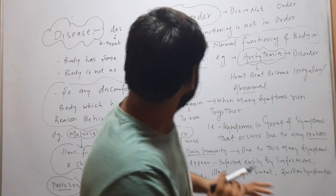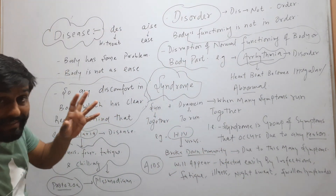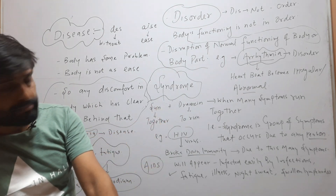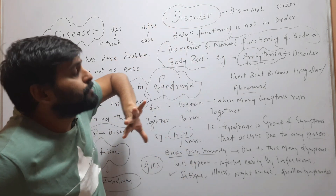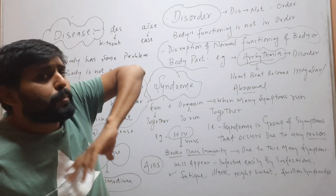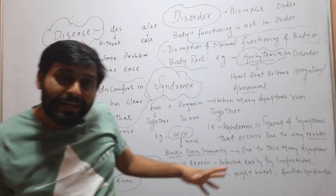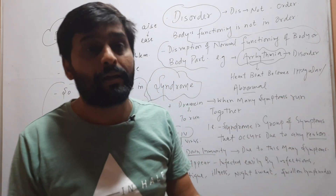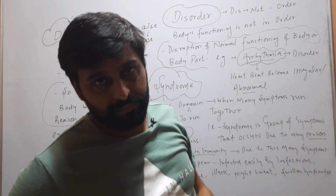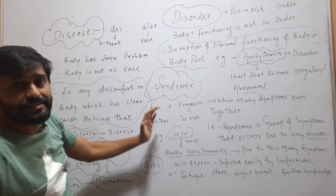So to summarize: disease means the body is at discomfort and there is a clear reason behind it. Disorder is when the body's functioning — or that of a body part — is disrupted. Syndrome is when many symptoms occur together and these symptoms may vary person to person. This is the difference between disease, disorder, and syndrome.